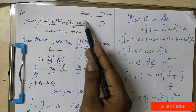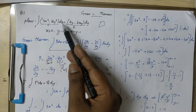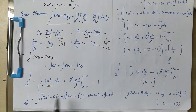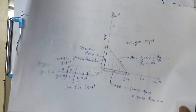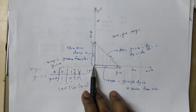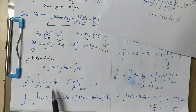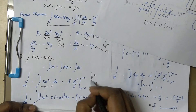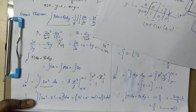Along this path, y in the total is 0. So, with y equal to 0, we get 3x² dx. Integrating from 0 to 1 with respect to x. x² integrates to x³ by 3. With upper limit 1 and lower limit 0, we get 1.